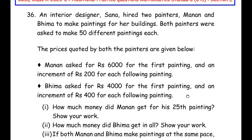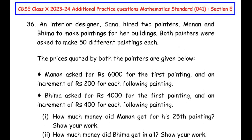An interior designer Sana hired two painters Manan and Bhima to make paintings for her buildings. Both painters were asked to make 50 different paintings each. There are two painters hired by Sana and each painter is assigned 50 different paintings to paint. The prices quoted by both the painters are given below.